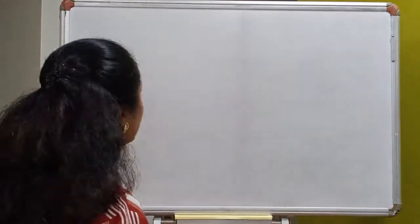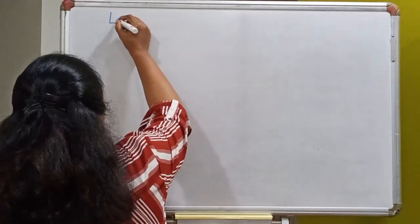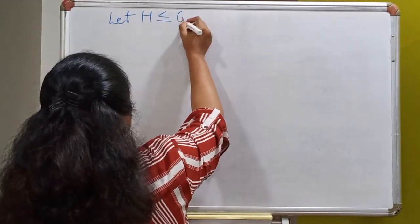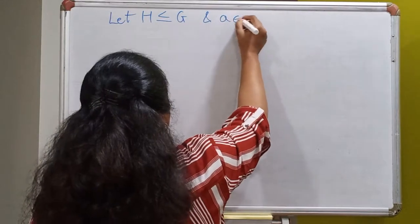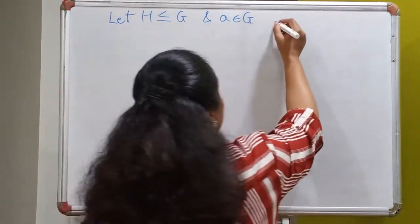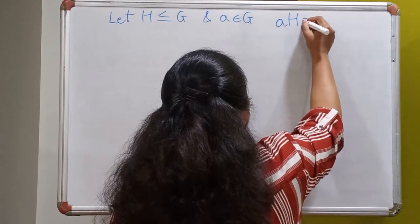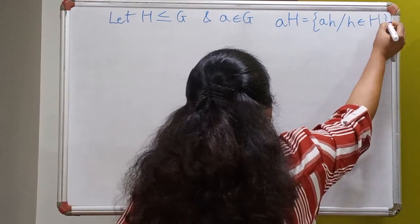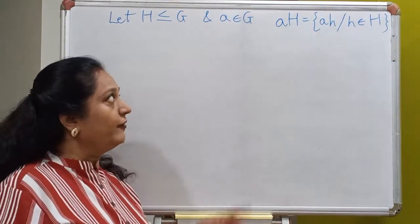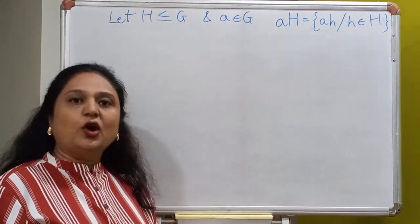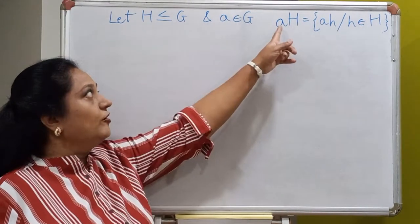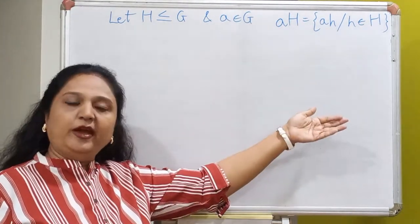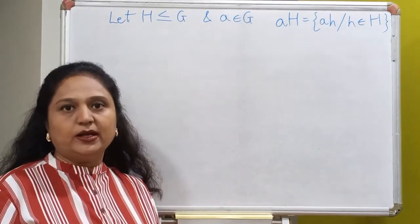So let's quickly recall the definition of a coset and then we will start with our properties. Let H be a subgroup of a group G and A be an element of G. Then the set AH, which is obtained by multiplying every element in the subgroup from the left by the element A, is called a left coset of H in G. And if you multiply from the right, you get a right coset.